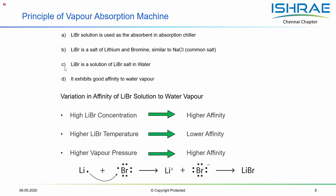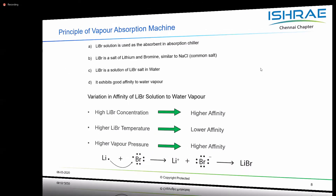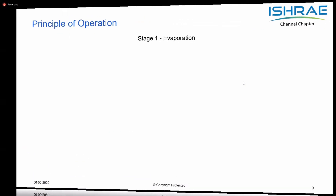This particular solution — salt and water — is the one which does the compression activity. The reason for using a salt solution in this system is that it has a very good affinity towards water, meaning that it is deliquescent by nature; it can absorb moisture. This particular property is used in the system, and the affinity towards water vapor improves as the concentration of the solution increases and is very good when the temperature is low.